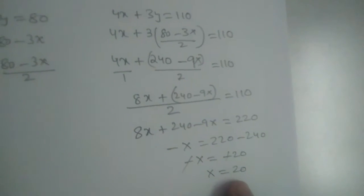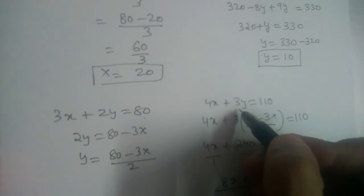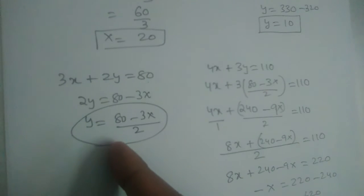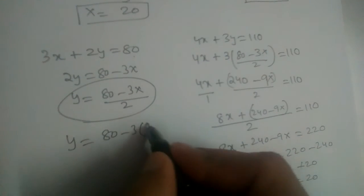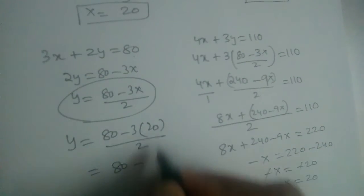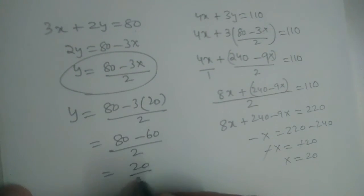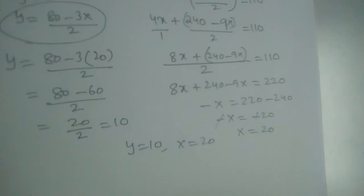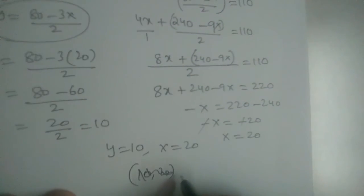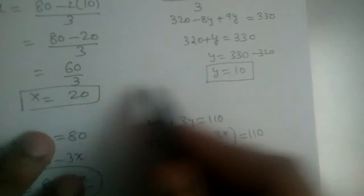With x = 20, we substitute back into y = (80 − 3x) / 2: y = (80 − 3×20) / 2 = (80 − 60) / 2 = 20 / 2 = 10. So y = 10 and x = 20. Remember: write the solution as x, y — that is (20, 10) — not the other way around. We get the same answer both ways.